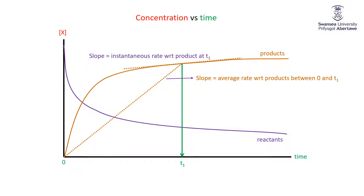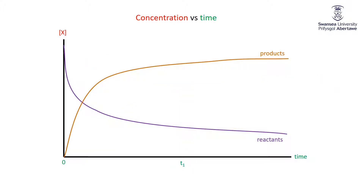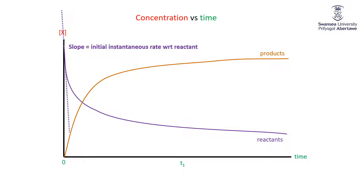By convention, to allow chemists to compare rates of different reactions, we define the rate with respect to reactants as the instantaneous rate with respect to the reactant at the start of the reaction. So we plot the concentration of the reactants against time, draw the tangent to the line right at time zero — the initial speed. Every reaction has an initial rate, and so every time from now on when I say rate of reaction, I'm talking about the initial instantaneous rate with respect to one of the reactants.